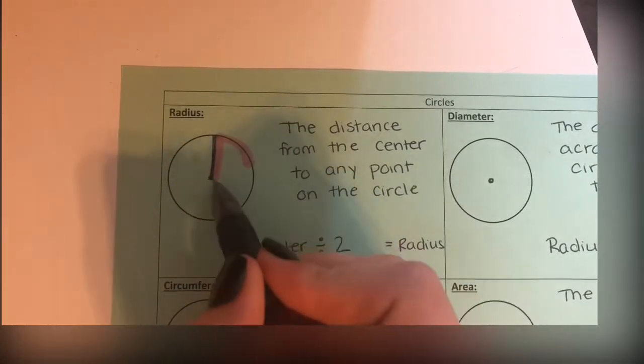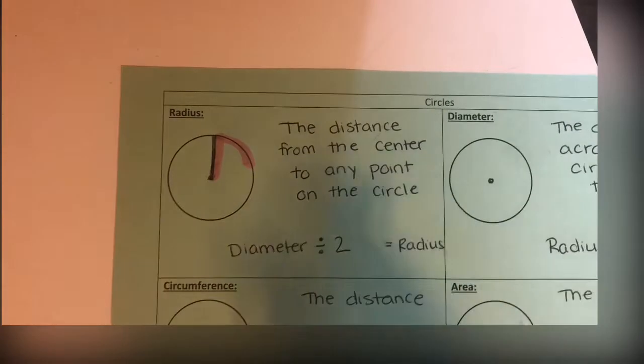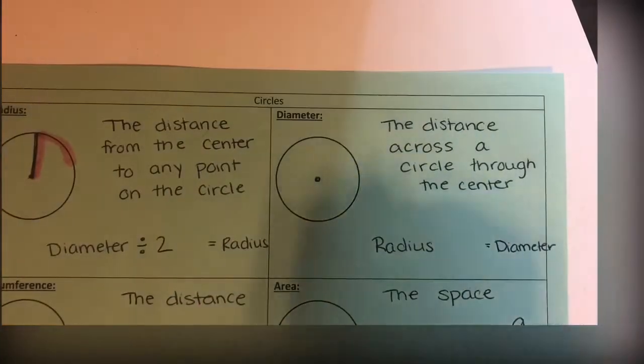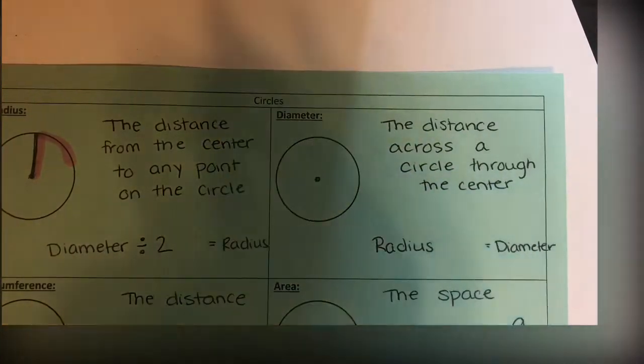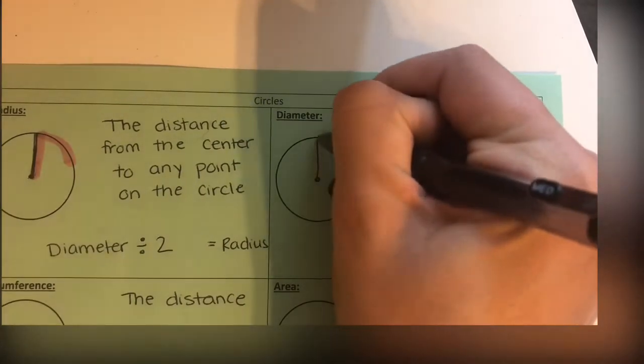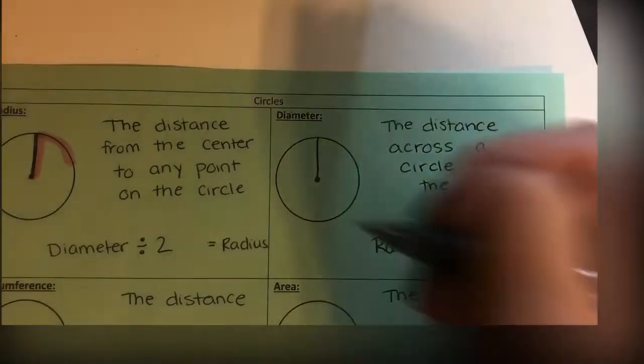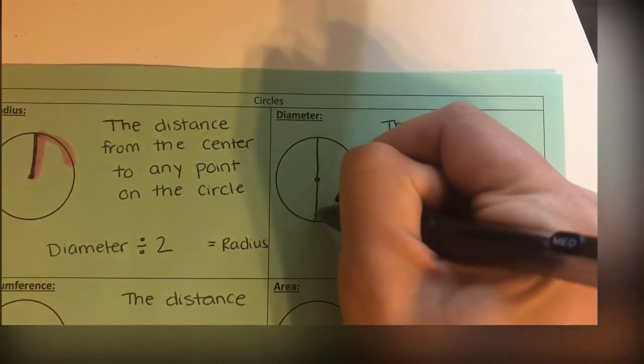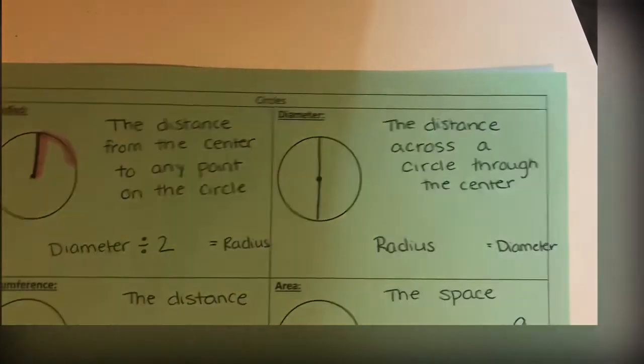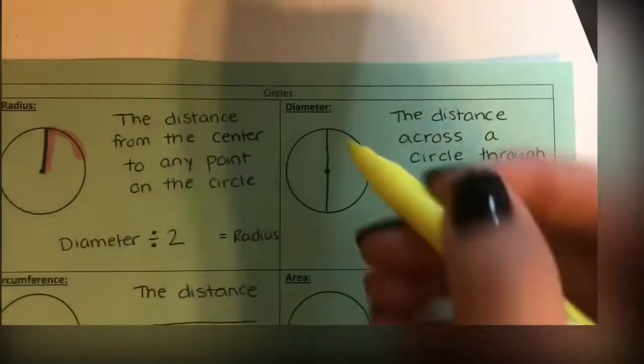Diameter is the distance across through the center. So you have the radius like this, and if I were to have the diameter, I'm drawing the other side of that line. It's all the way across, not just halfway through. Just like radius made a little 'r,' diameter makes a 'd.'